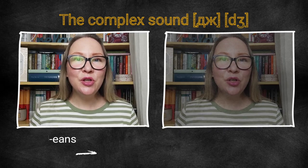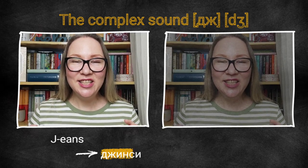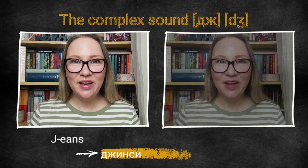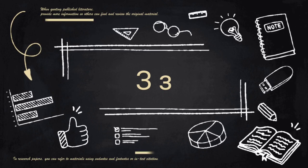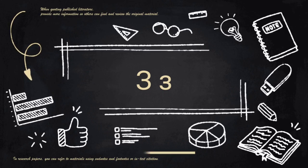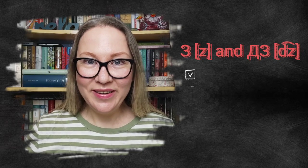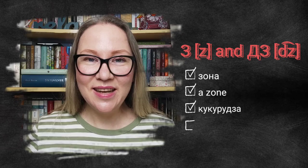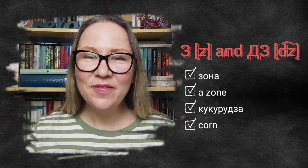ДЖ — like in «jeans» — «джинси». The next letter is З. З itself is easy — «зона» — a zone. But what about «кукурудза» — corn? Here we pronounce Д and З together as one sound: ДЗ. Sounds funny, doesn't it?